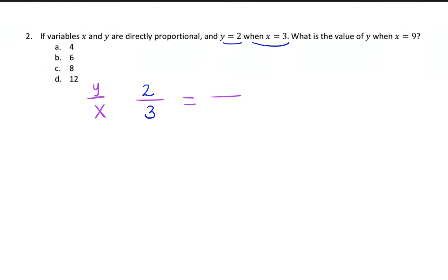Now it wants us to know what is the value of y. So we don't know what y is going to be in the second fraction when x is equal to 9. So again, x's are on the bottom of our fractions. So we're going to put 9 on the bottom. So now we just have a proportion that we just have to solve.